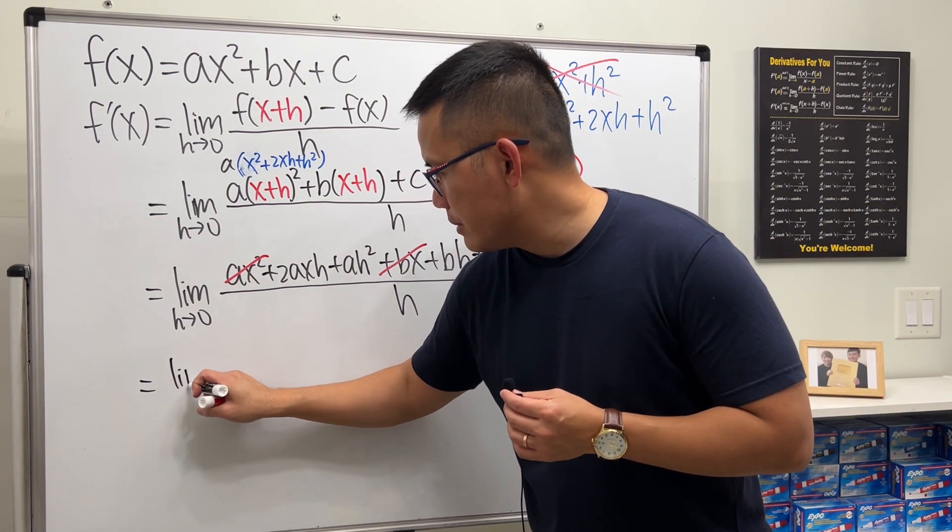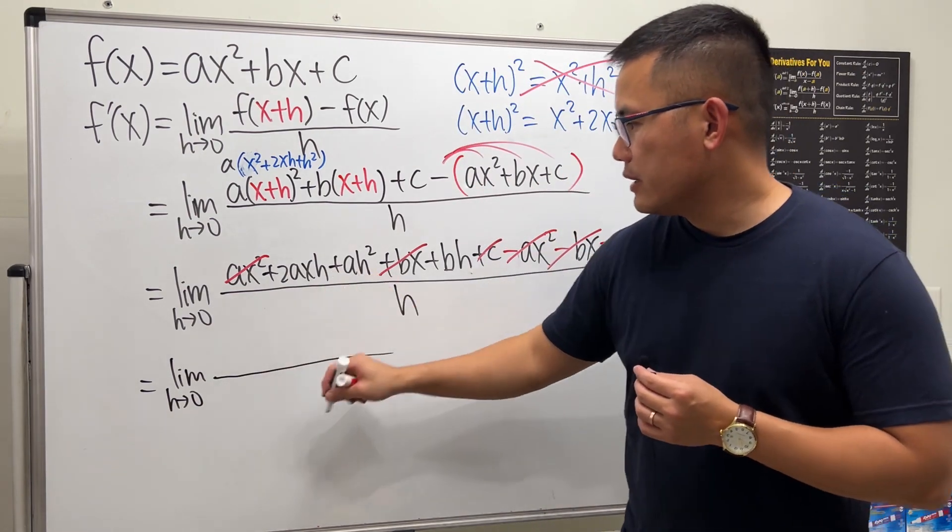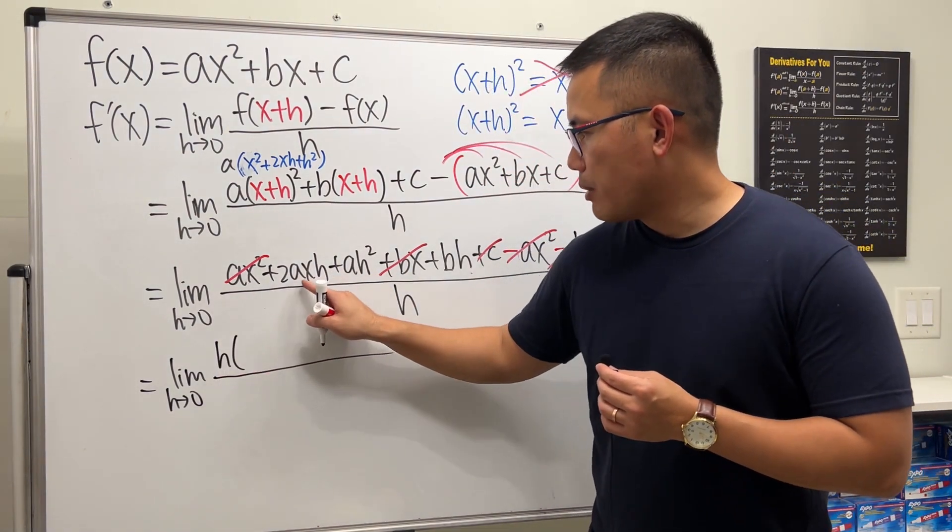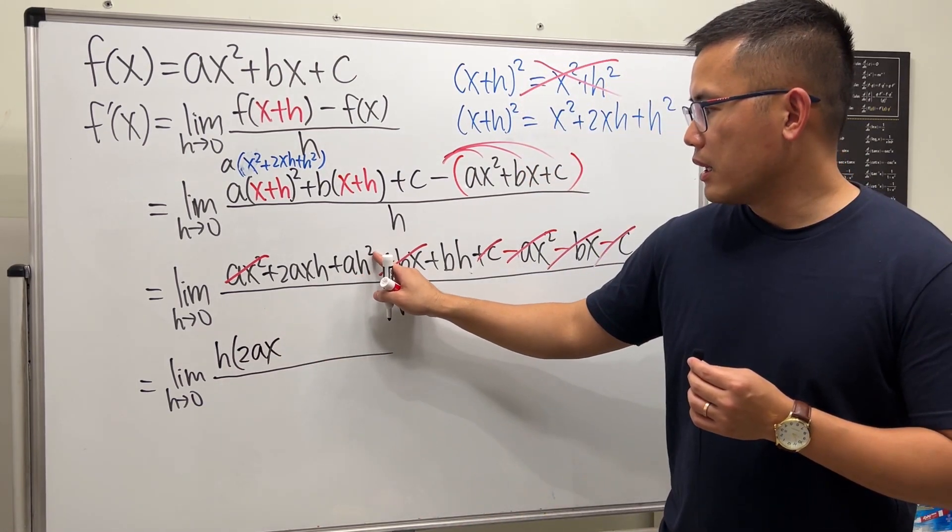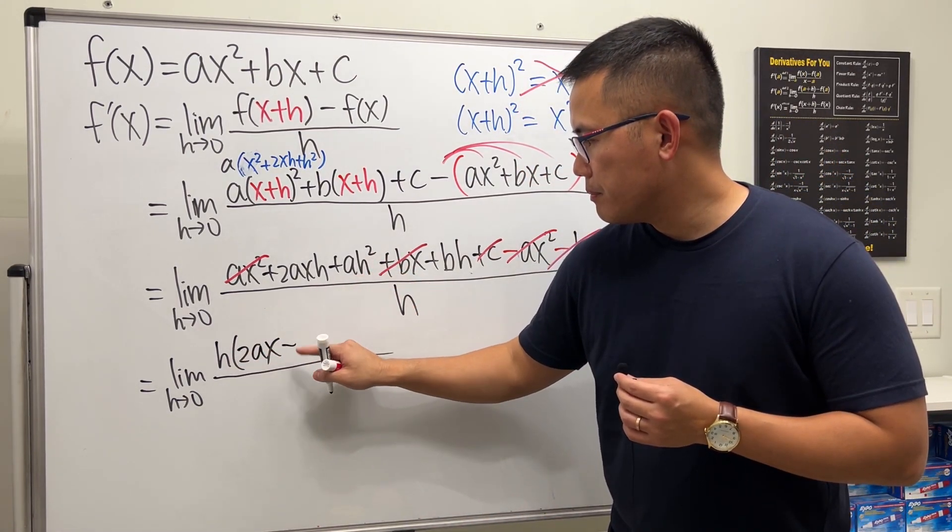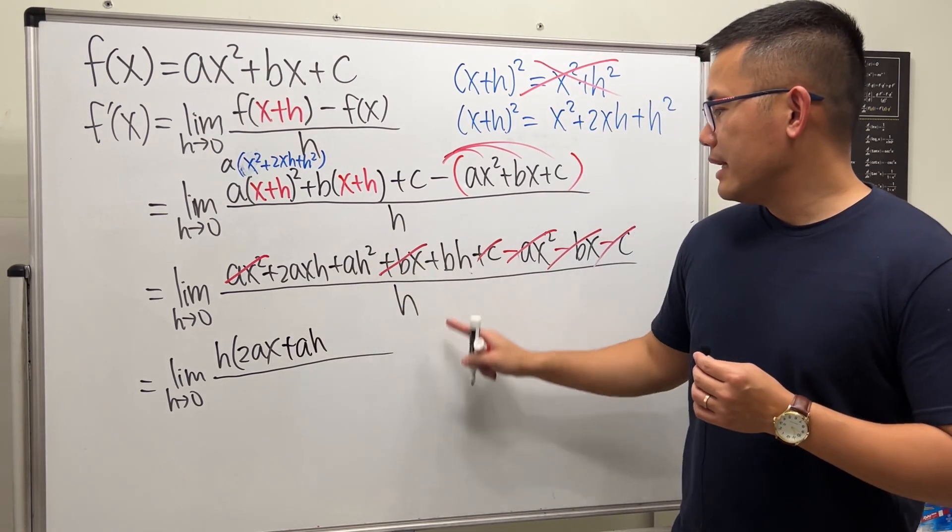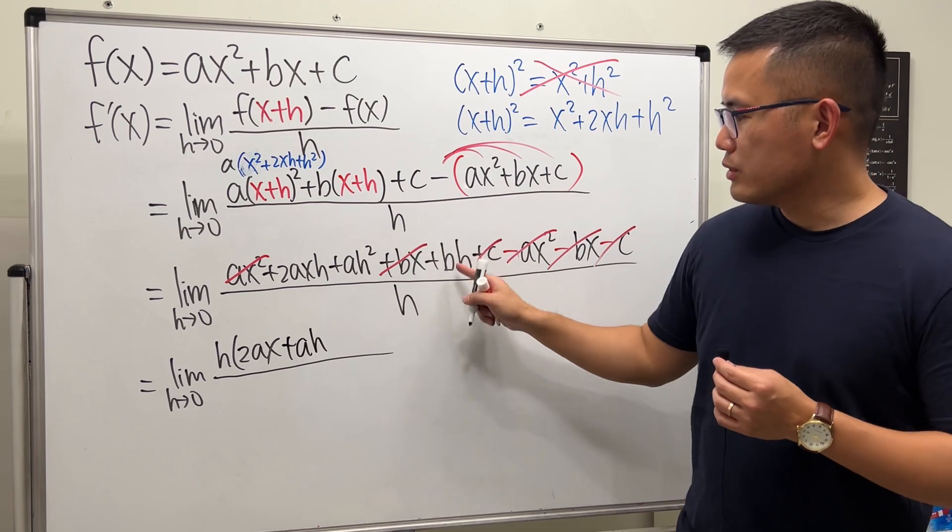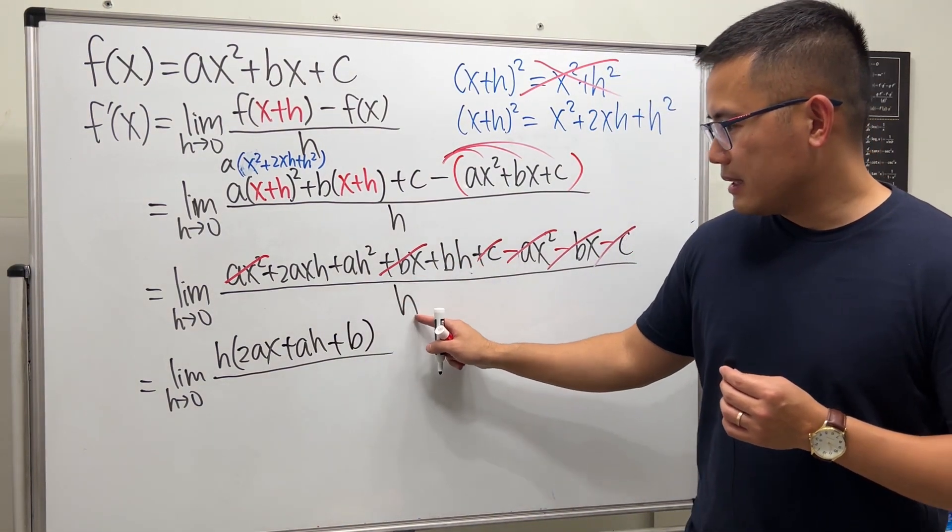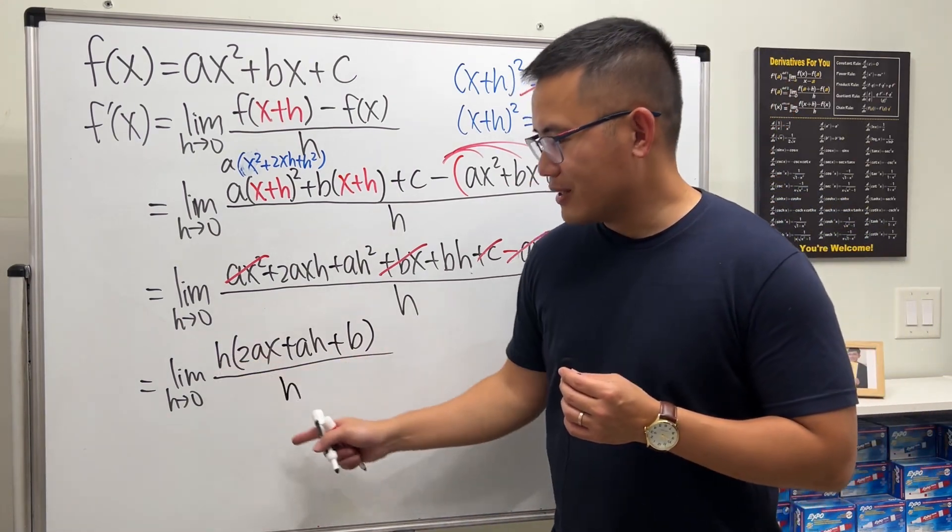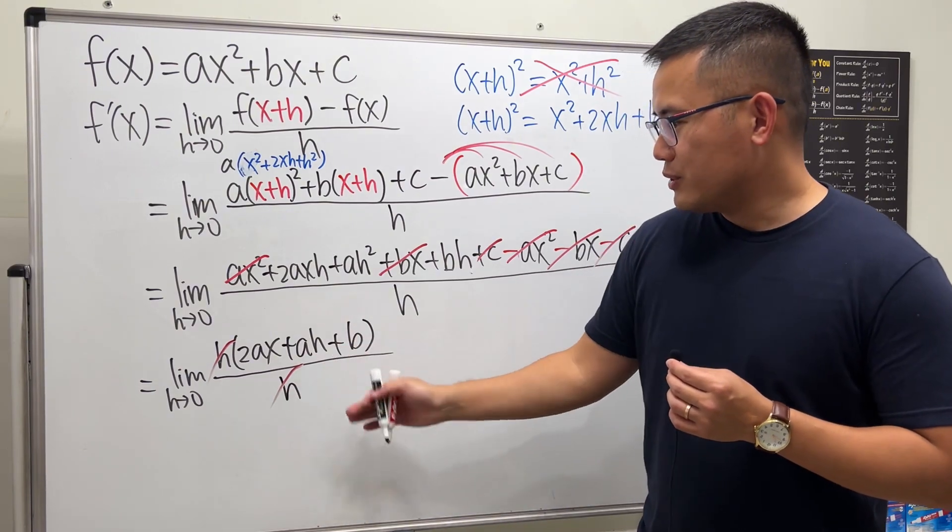So this is the limit as h approaching 0. Factoring out the h, this part we get 2ax. This part we'll just get plus ah to the first power. And that's the bh, so h is out, so we have just plus b. And then all divided by this h. Are we going to cancel out the h? Surely, we do. That's pretty much it.